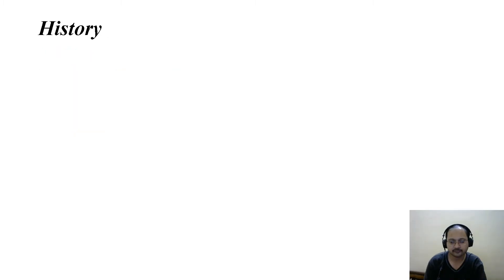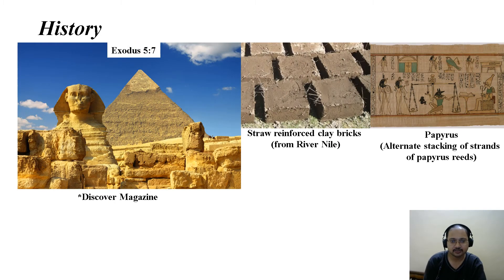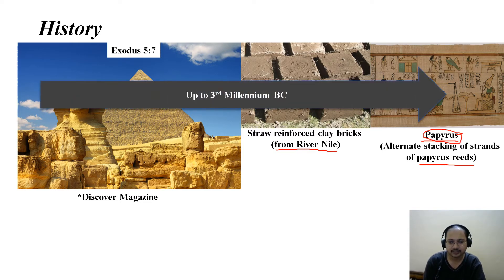Coming to the history of composite materials, it has been reported back in Exodus by the Egyptian civilizations where straw-reinforced clay bricks have been made from River Nile. This evolved to papyrus, the alternate stacking of strands of papyrus reeds. You can also understand the word paper has come from papyrus. This has happened up to the third millennium BC.